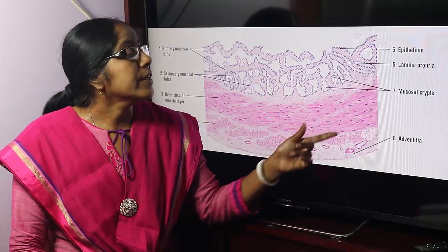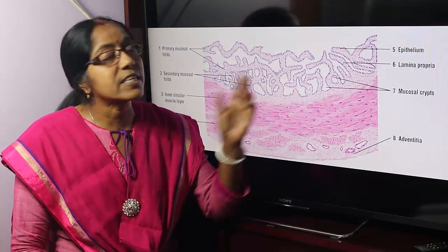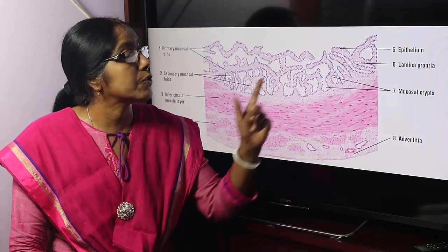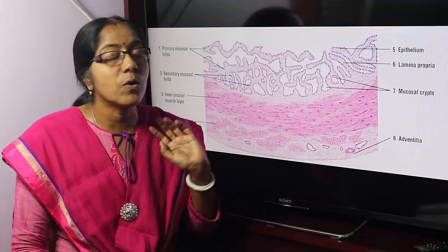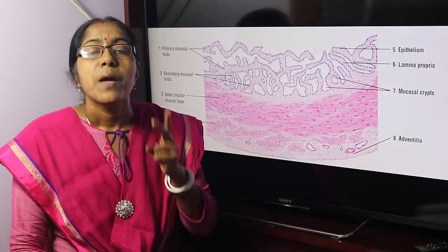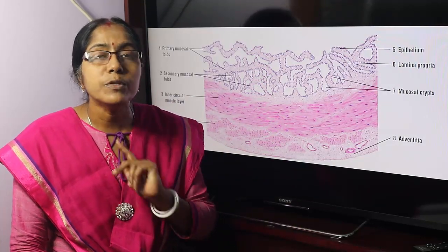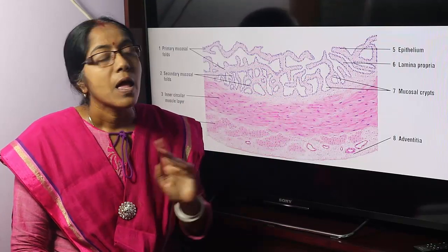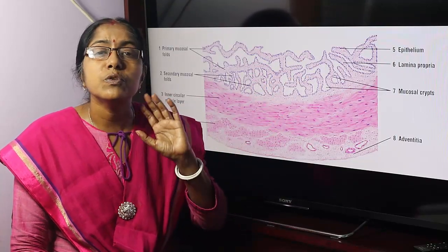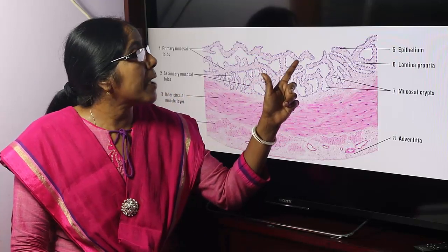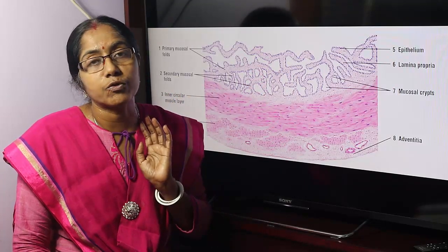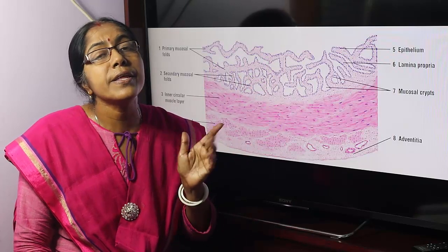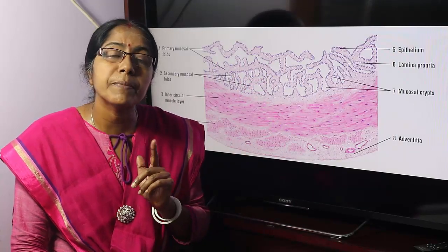Now the histological structure. The section shows three coats: mucosa, muscle coat, and adventitia. The mucosa is composed of two layers — the lining epithelium and the lamina propria. The mucosa shows numerous folds, both primary and secondary folds, which give it the appearance of a honeycomb.